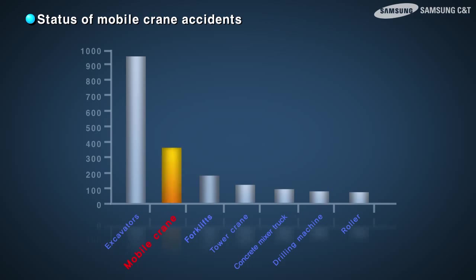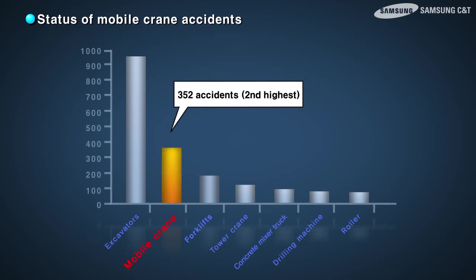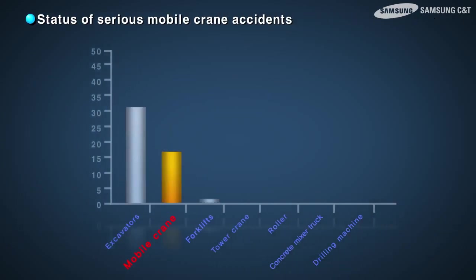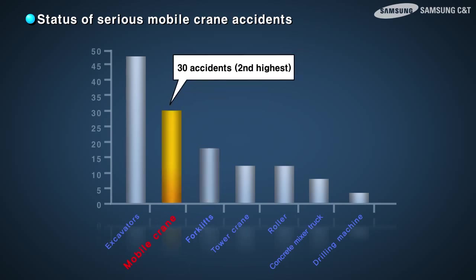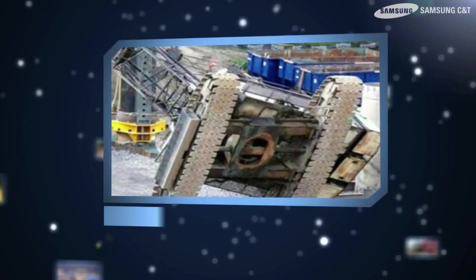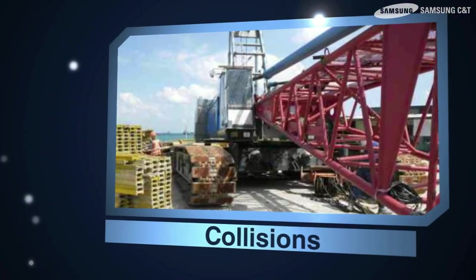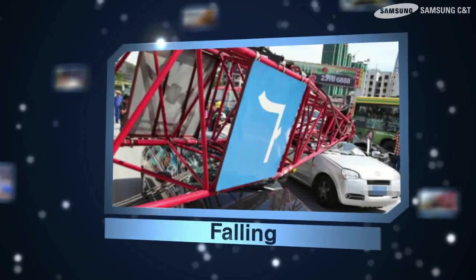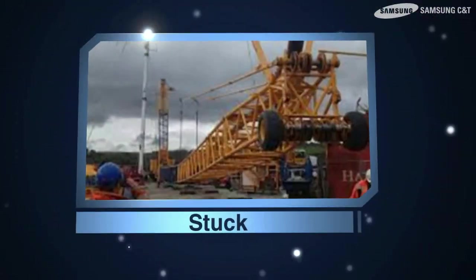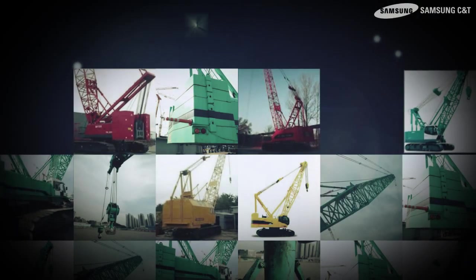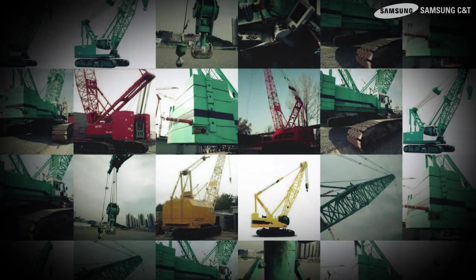Accidents involving crawler cranes have been increasing over the past three years. Most crawler crane accidents lead to serious injuries. Crawler crane related accidents include rollovers, collisions, falling, and getting stuck. Let's take a look at the basic items and inspection methods for crawler cranes.